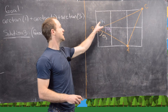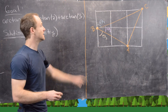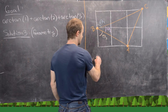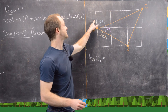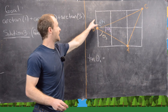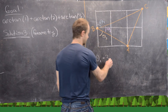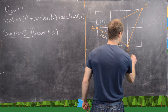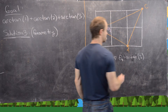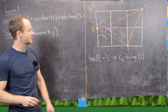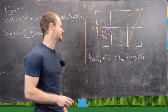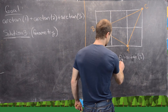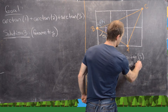We can calculate theta 1 and theta 3 easily since they're parts of right triangles. For theta 1, the opposite length is 3 units and the adjacent is 1 unit, so tangent of theta 1 equals 3, meaning theta 1 equals arctan(3). For theta 3, the opposite is 2 units and adjacent is 1 unit, so tangent of theta 3 equals 2, meaning theta 3 equals arctan(2).